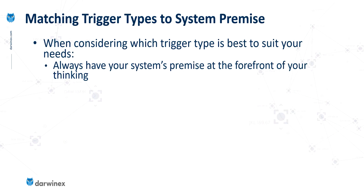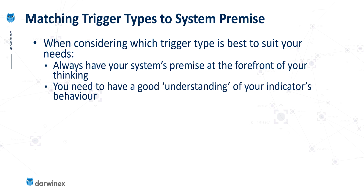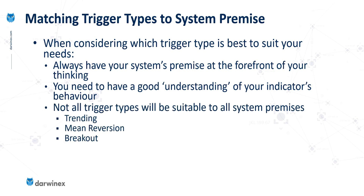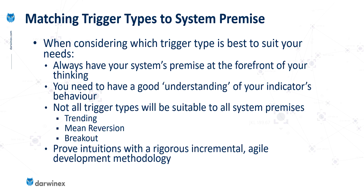These next points are probably the most important. When starting out on the journey of looking at how an indicator can help you, you have to have your system's premise at the forefront of your mind. Combined with a really good understanding of your indicator's behaviour and the type of information it gives out, that will give you the most likely type of trigger that will work for your system. Not all trigger types will be suitable to different trading strategies — one that works well in a trending market might not work well in a mean reverting market, and vice versa. Good quality backtesting and a good starting point will help you know where to focus your efforts.